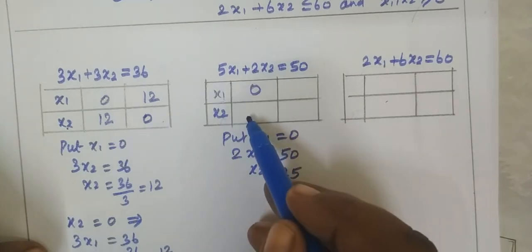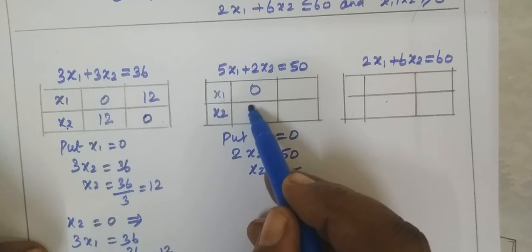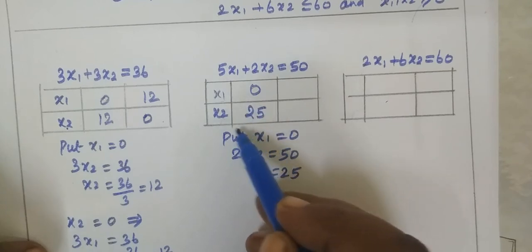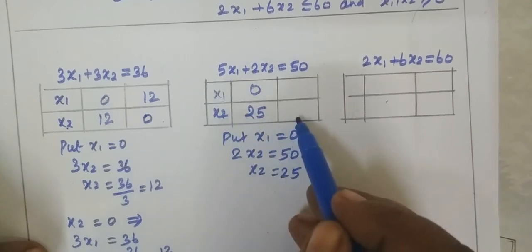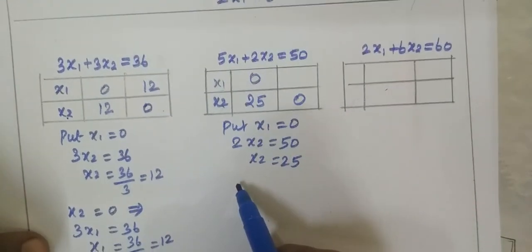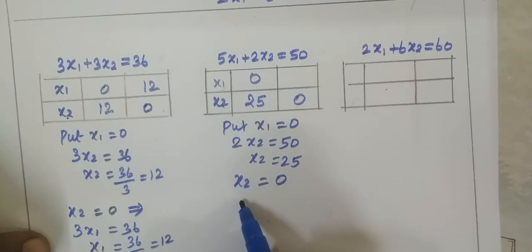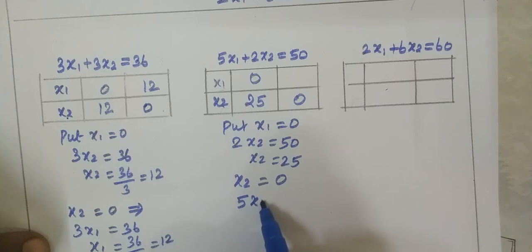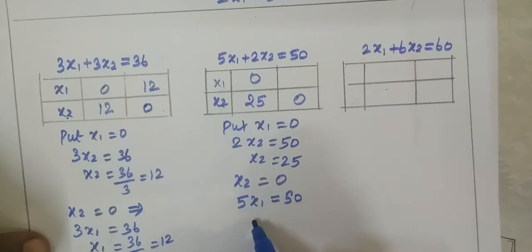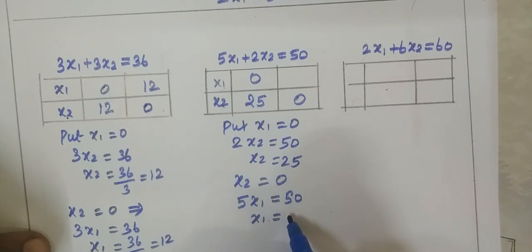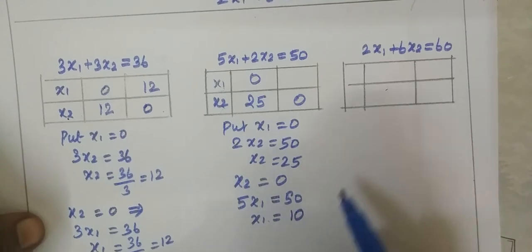Now put x2 equal to 0 and substitute. Then 5x1 equal to 50, therefore x1 equal to 50 divided by 5, equal to 10. So the second intercept is (10, 0).